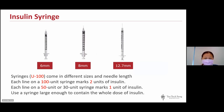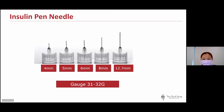In Singapore we use the insulin syringe U100, paired with U100 concentrated insulin — meaning 100 units per mL. In some countries they use U40 or U500 insulin. It is very important to use the correct insulin syringe to avoid overdosing or underdosing. Syringes come in different sizes and needle lengths. A 100-unit syringe marks 2 units of insulin; 50- and 30-unit syringes mark 1 unit. Use a syringe large enough to contain the whole dose — for example, for 8 units, use a 30-unit syringe rather than a 50- or 100-unit syringe. Insulin pen needles currently come in lengths of 4mm, 5mm, 6mm, and 8mm; the 12.7mm needle has been phased out. The gauge is about 31 to 32G.